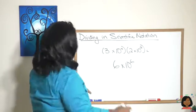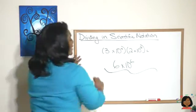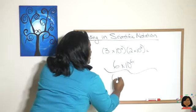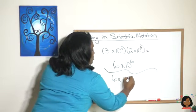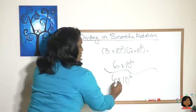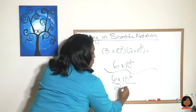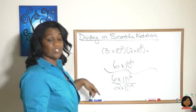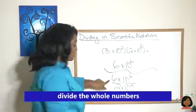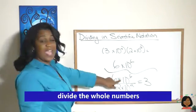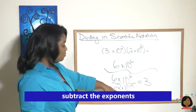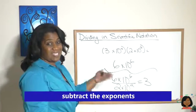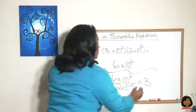Watch this. Let's take this problem: 6 times 10 to the sixth over 2 times 10 squared. We're going to divide our whole numbers: 6 divided by 2 is 3. And we're going to subtract our exponents: we have a 6, we have a 2, 6 minus 2 is 4. So here we are at 3 times 10 to the fourth. That would be your answer.